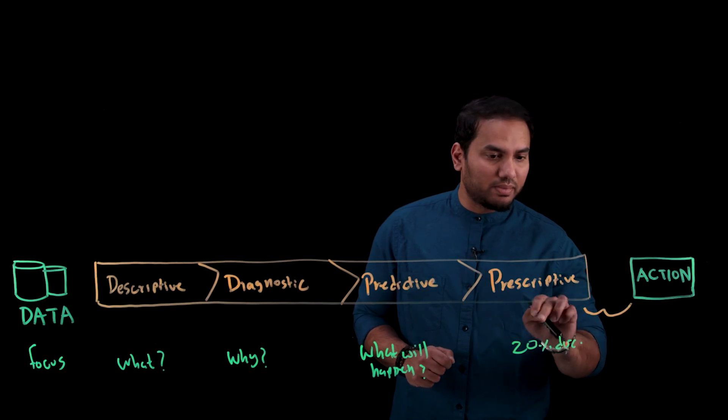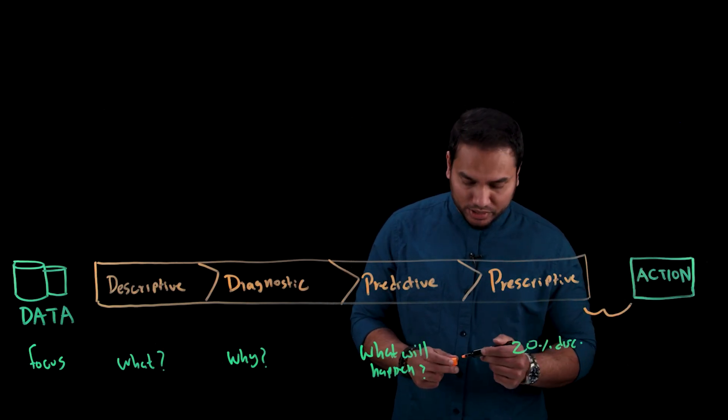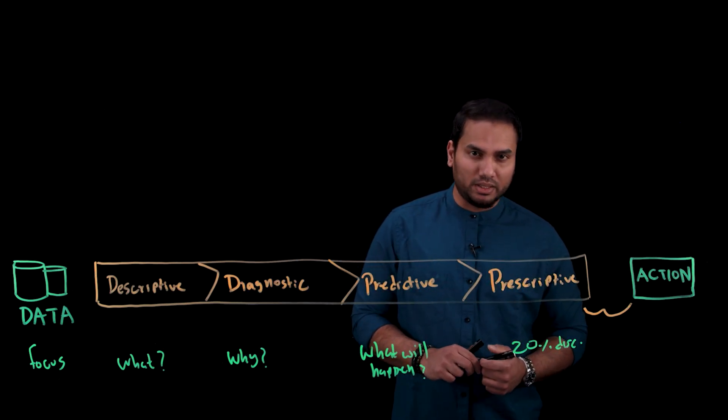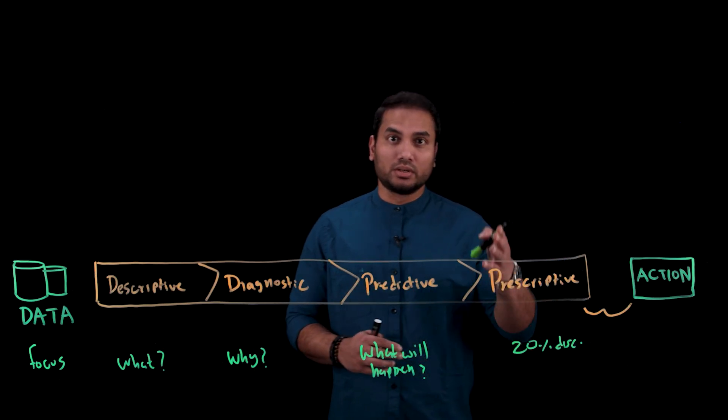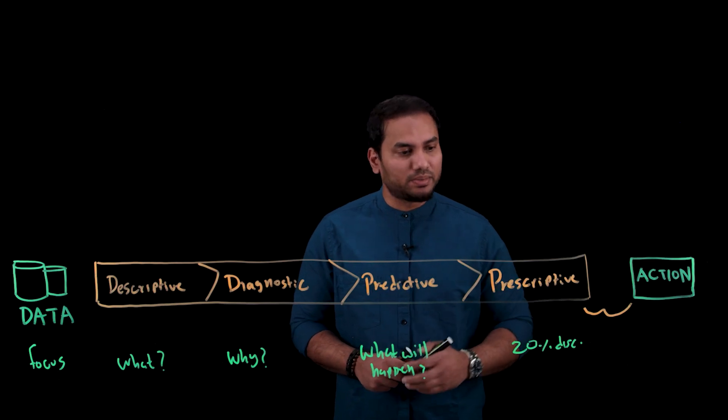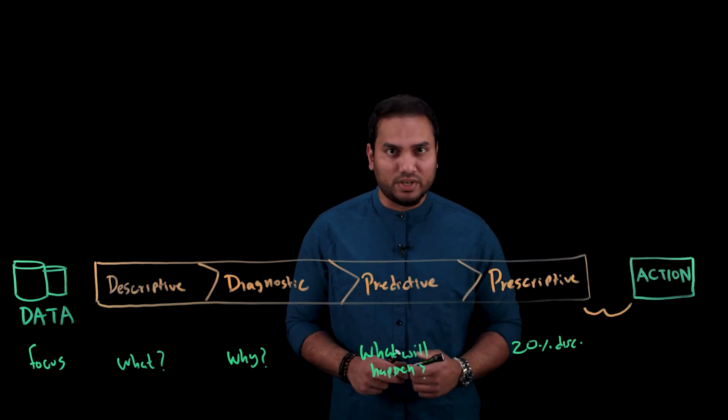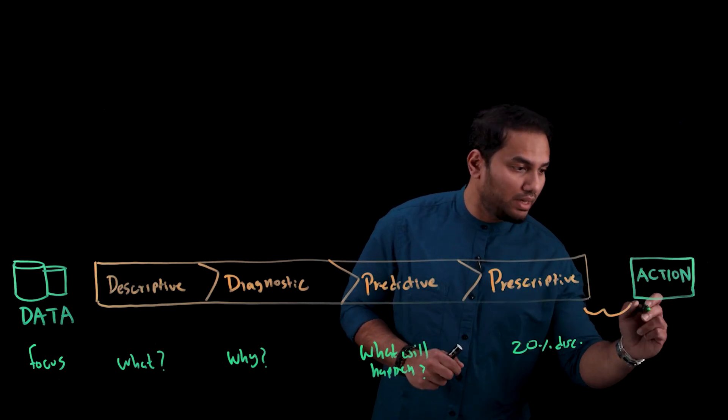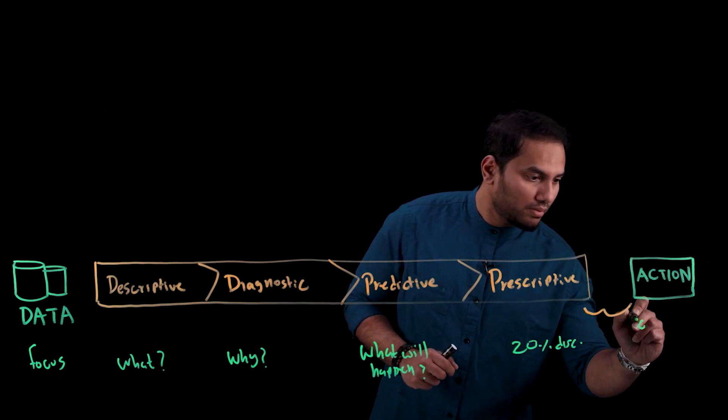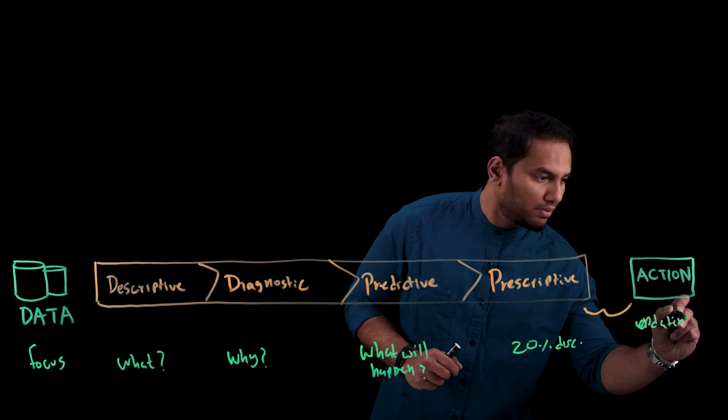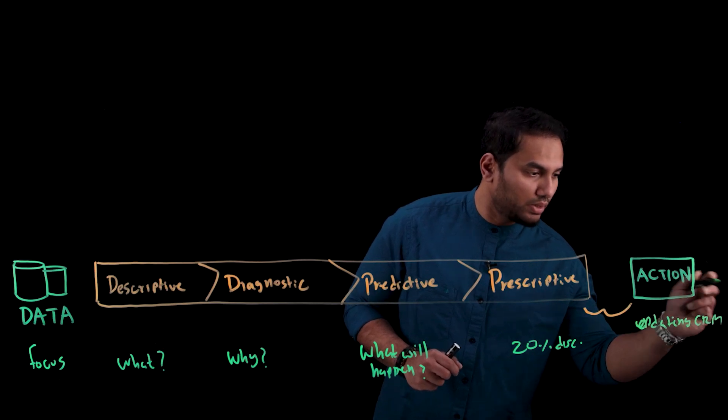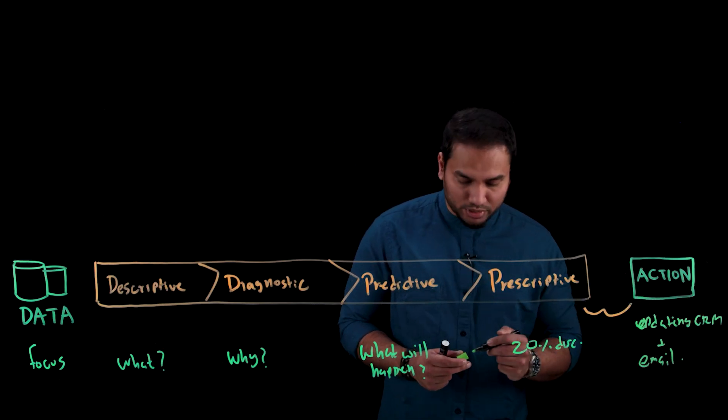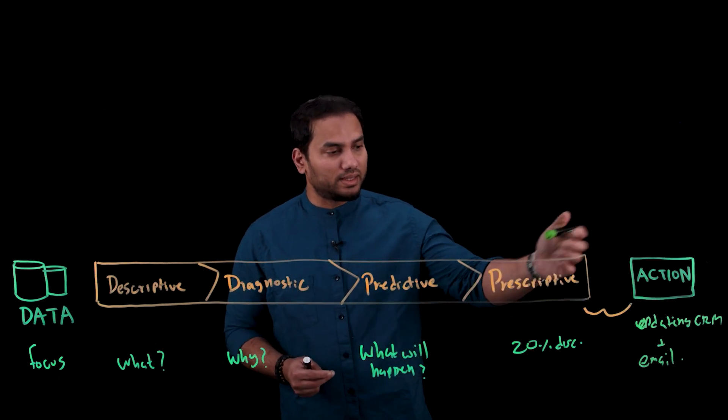However, you have this chasm now between analytics and action. And to cross the chasm between analytics and action, you have workflow automation capabilities or workflow automation tools that come in. So it could take the input of a prescriptive piece of insight and then automate a bunch of downstream actions. And an example of one of these actions could be updating your CRM tool with the 20% discount and sending an email out to your CSMs, letting them know that that action was taken.